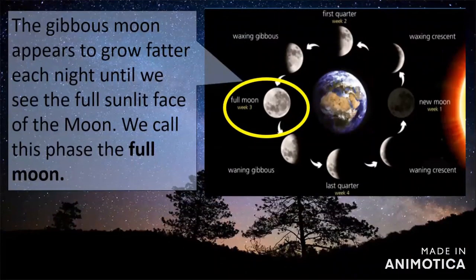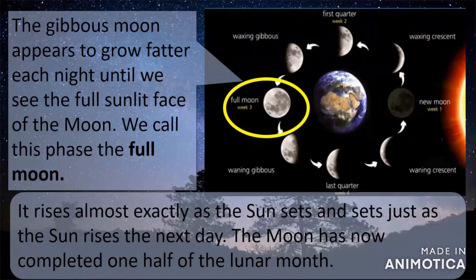The gibbous moon appears to grow after each night until we see the full sunlit face of the moon — we call it the full moon. It rises almost exactly as the sun sets and sets just as the sun rises the next day. The moon has now completed one half of the lunar month.